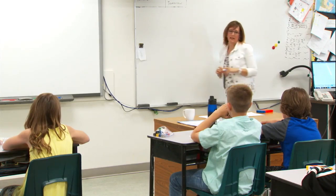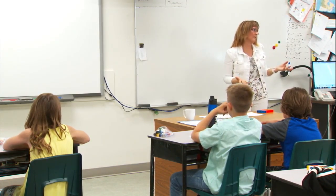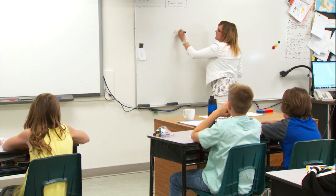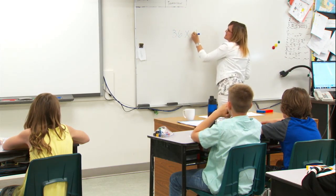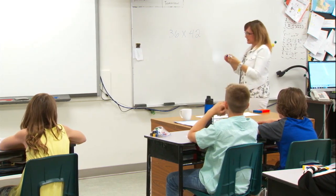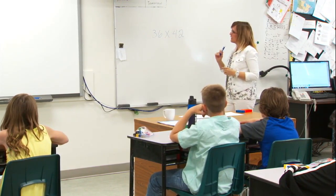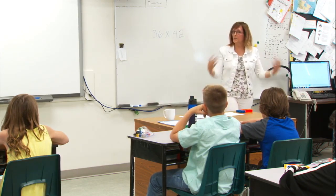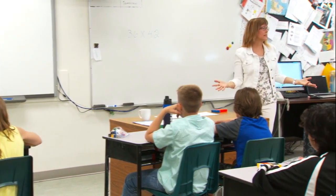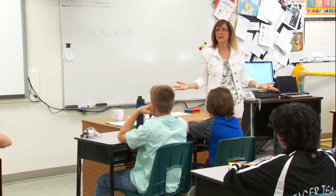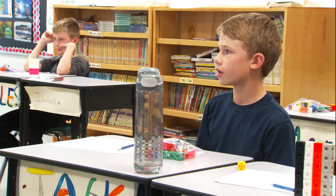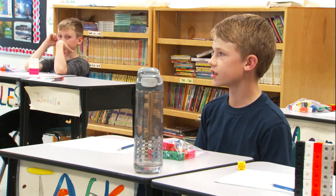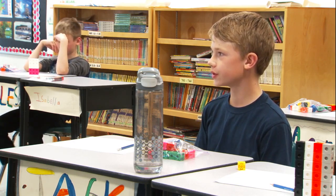This same strategy of breaking numbers into friendlier numbers to multiply can be used when multiplying two-digit numbers. And we'll do 36 times 42. Now this can be difficult numbers to work with on its own, but if we wanted to make this a little easier, how could we break up these numbers so they're a little easier to work with? How could we write these as friendlier numbers to multiply? Jack? 30 plus 6 times 40 plus 2. Great, good job.